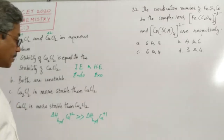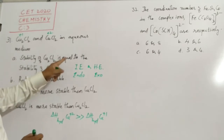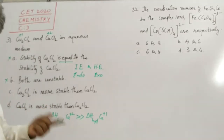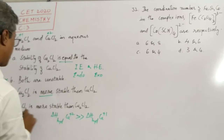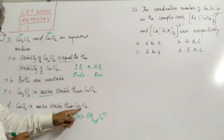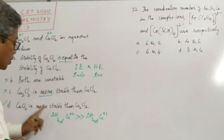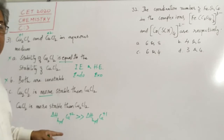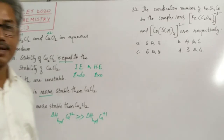This means Cu²⁺ salt in aqueous medium is more stable — very much more stable — than Cu⁺. So the stability of both is not equal; that option is incorrect. Both being unstable is also incorrect. Cu₂Cl₂ being more stable is incorrect; it is the reverse. CuCl₂, cupric chloride, is more stable than cuprous chloride because of the greater hydration energy of the cupric ion.